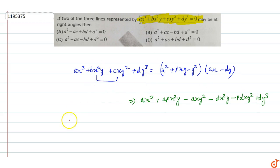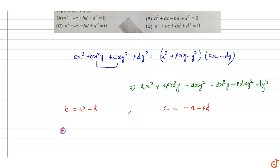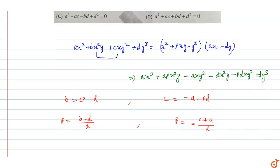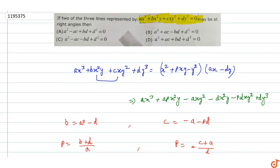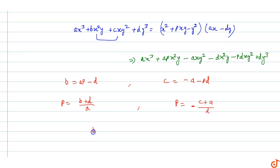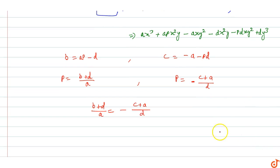We equate the x³ and dy³ terms. Equating the x²y coefficient: the x²y coefficient gives us minus ap minus d. For the xy² coefficient, we get c equals minus pd. So we get the relation: b plus d by a equals c plus a over d.